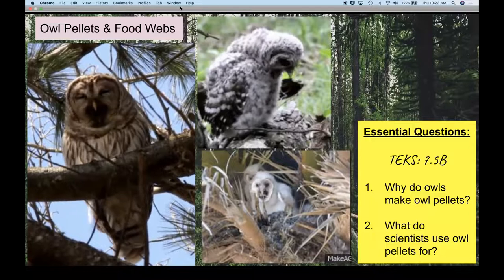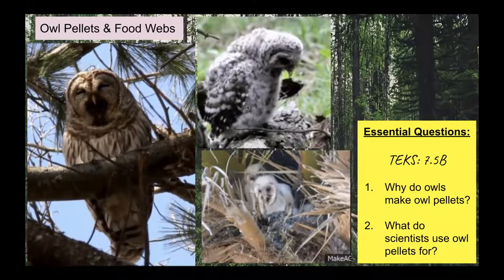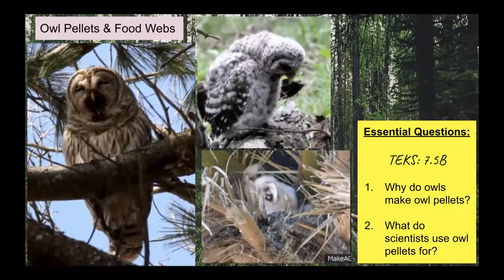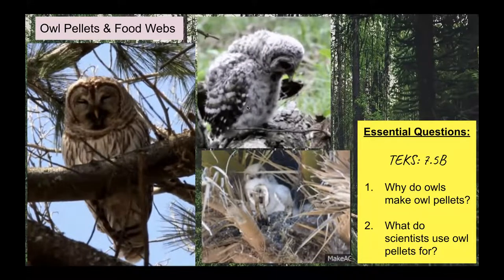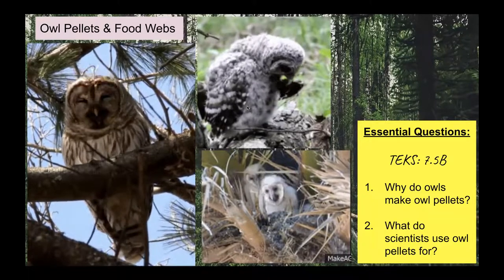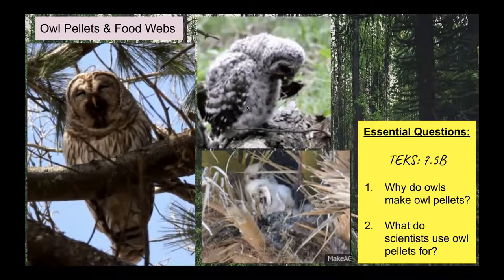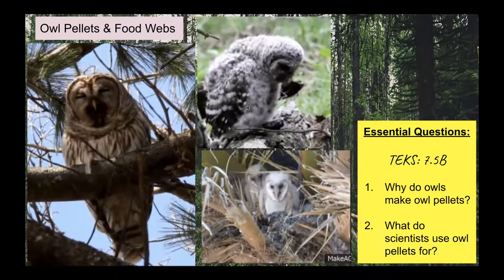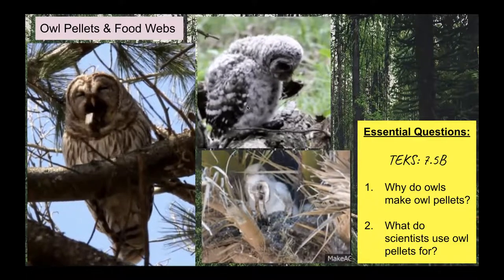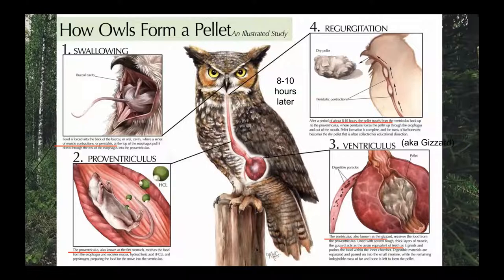An owl pellet is not poop. Instead, an owl pellet is a regurgitated mass of fur and bones. When owls eat their prey, they don't chew it. All the undigestible material — like fur and bones — gets spit back up in the form of a pellet. The owl first finds prey like a rodent, ingests and eats it whole, and it makes its way through what's called the proventriculus, which is sort of like a stomach.